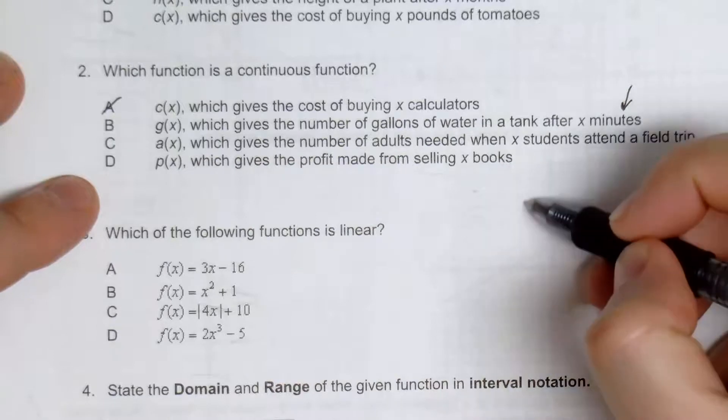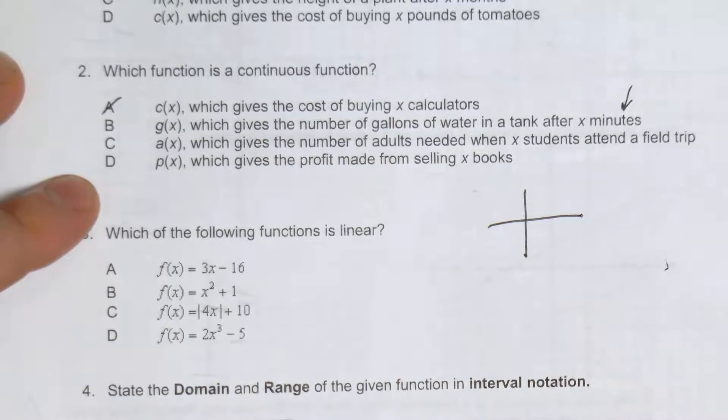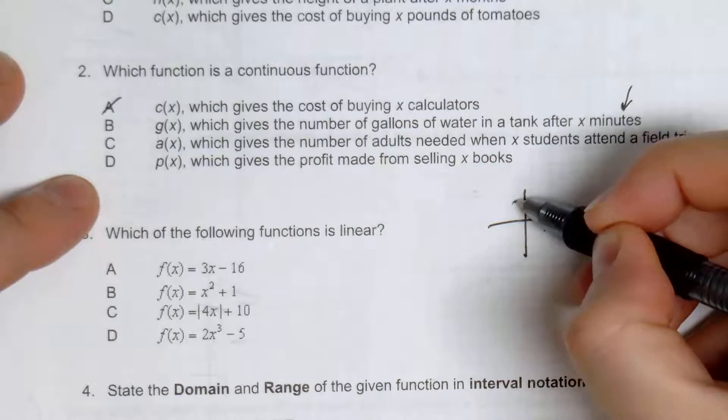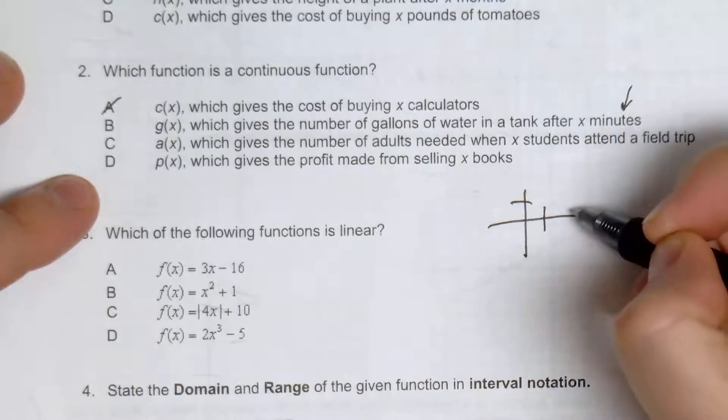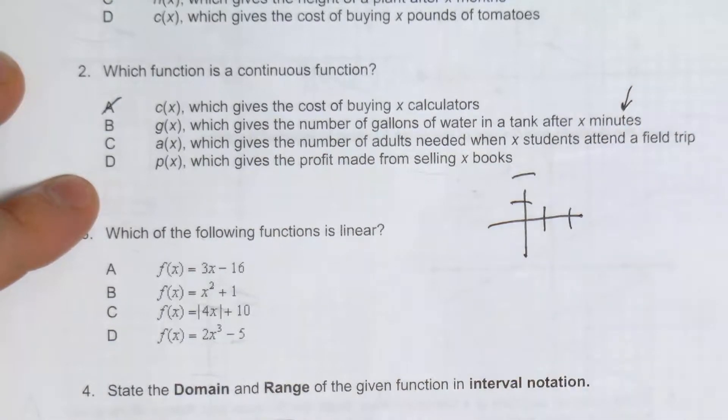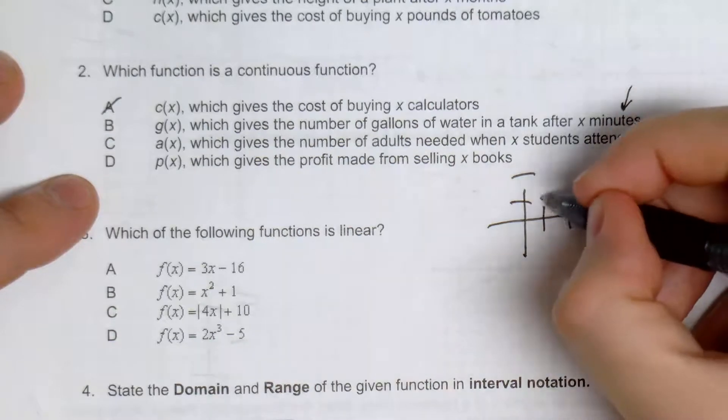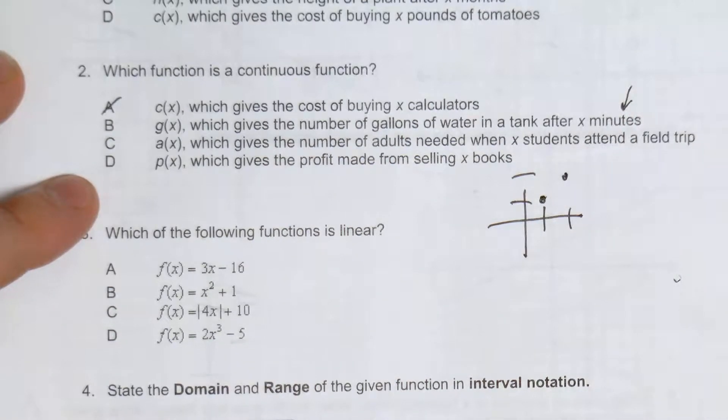Let's just say for every 10 students, you need one adult. 20, you need two adults. So that's definitely going to be distinct. There's nothing in between.